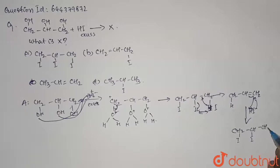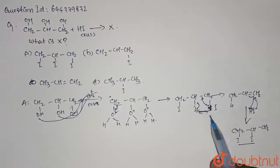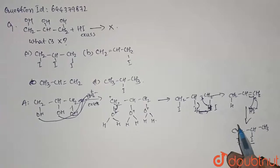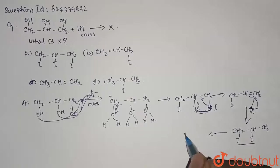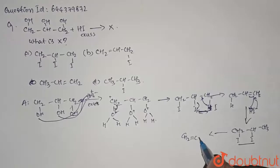Again, we have two iodines. It will happen similar to before where it will donate lone pair and go out as I2. So we'll get a compound like CH2=CH-CH3.